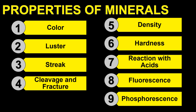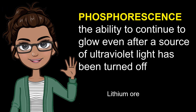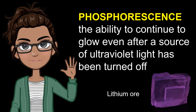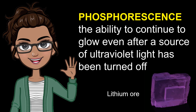The last and ninth property of mineral is phosphorescence. Some minerals would continue to glow even after a source of ultraviolet light has been turned off. This ability is called phosphorescence. The ore of lithium possesses this characteristic.